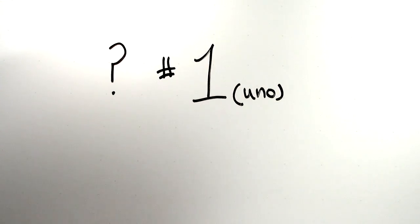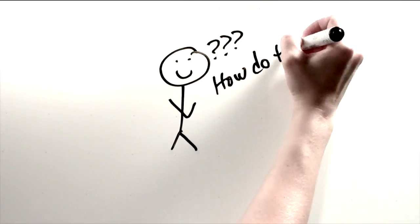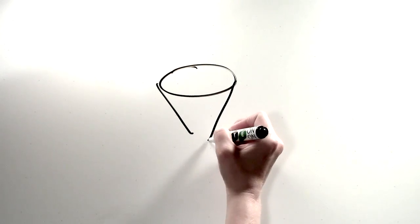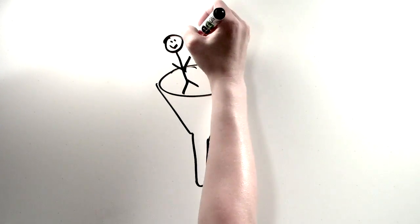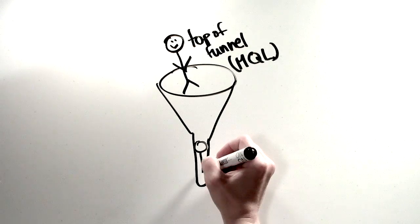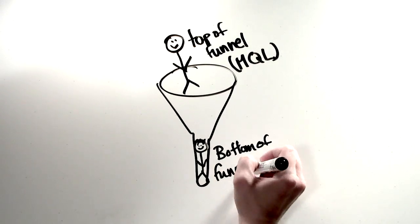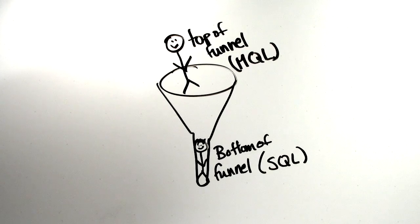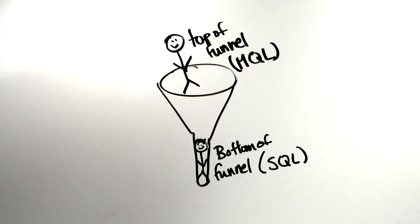Question number one, how does a client, that client maybe you in this case, define a lead? Within each and every demand generation campaign, we must understand the true definition of a lead before we can get started. Are they top of the funnel or bottom of the funnel? Top of the funnel is a marketing qualified lead and the bottom of the funnel is a sales qualified lead.